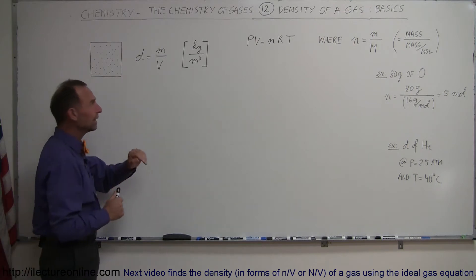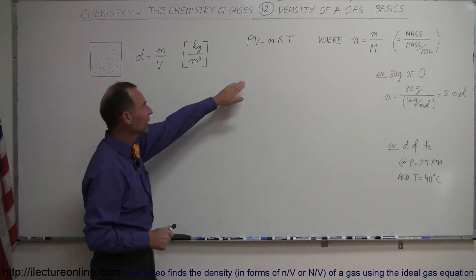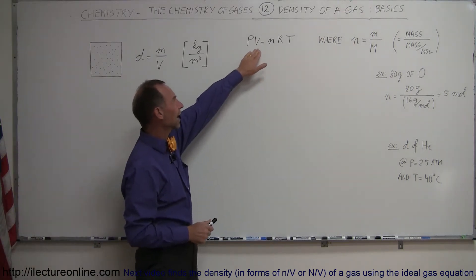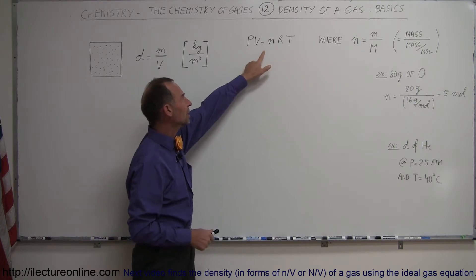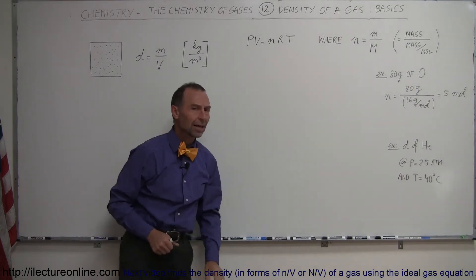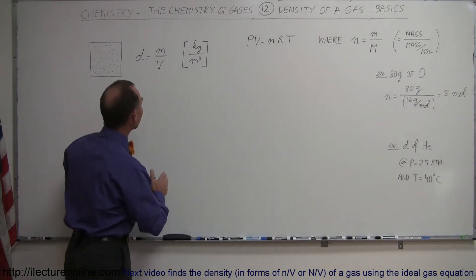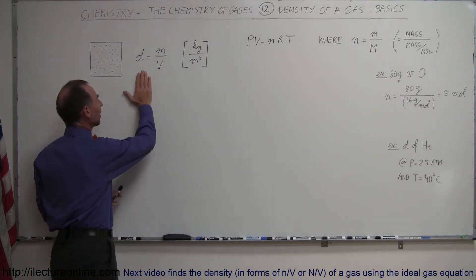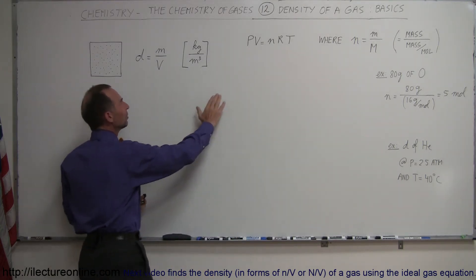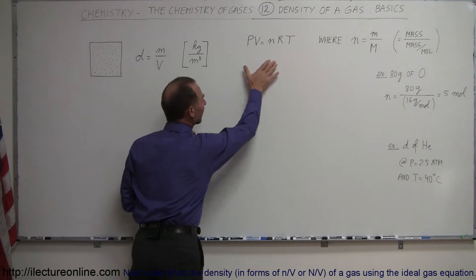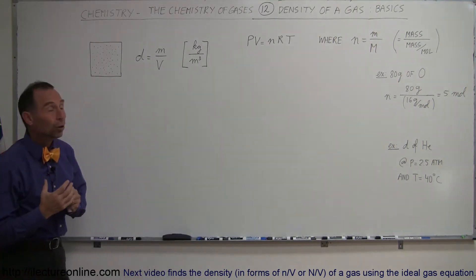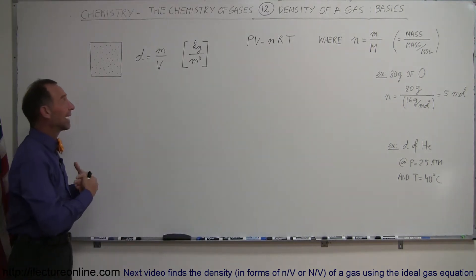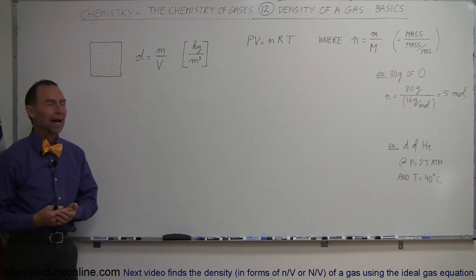We're also going to need the ideal gas law — the ideal gas equation — which is PV = nRT. We're going to combine the definition of density with the ideal gas equation to come up with a good equation to define the density of a gas.